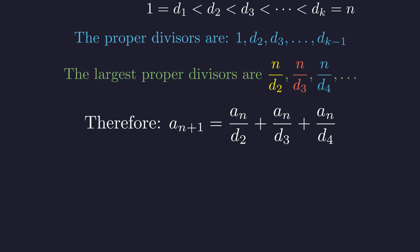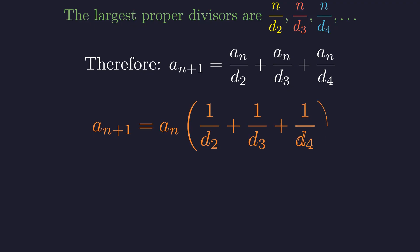Applying this to our sequence, we can write the recurrence relation. a_{n+1} is the sum of a_n over d2, a_n over d3, and a_n over d4, where these d's are the three smallest divisors of a_n greater than 1. Factoring out a_n gives a clearer form: a_{n+1} equals a_n times the quantity (1/d2 + 1/d3 + 1/d4). The behavior of the sequence depends entirely on this factor in the parentheses.